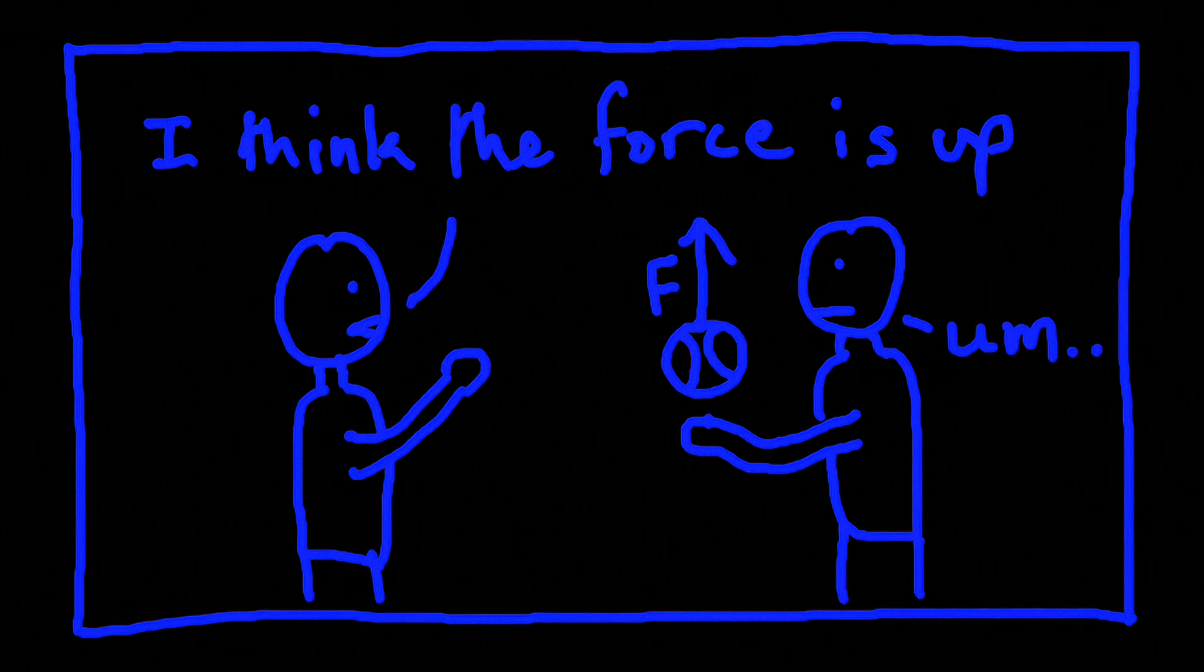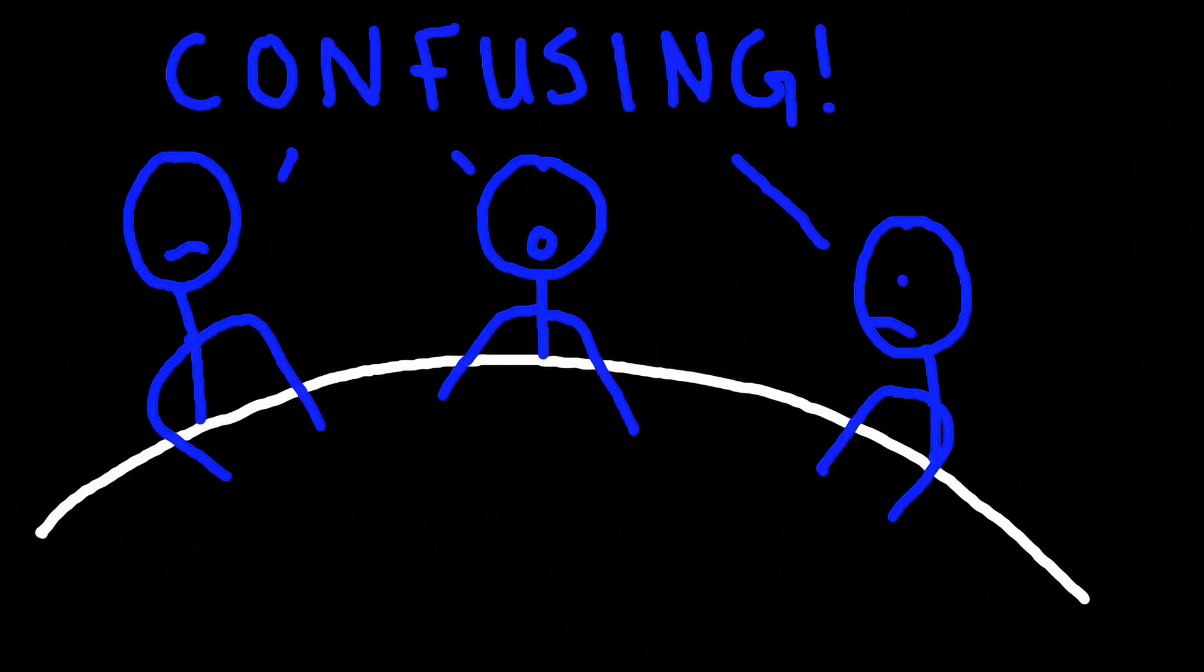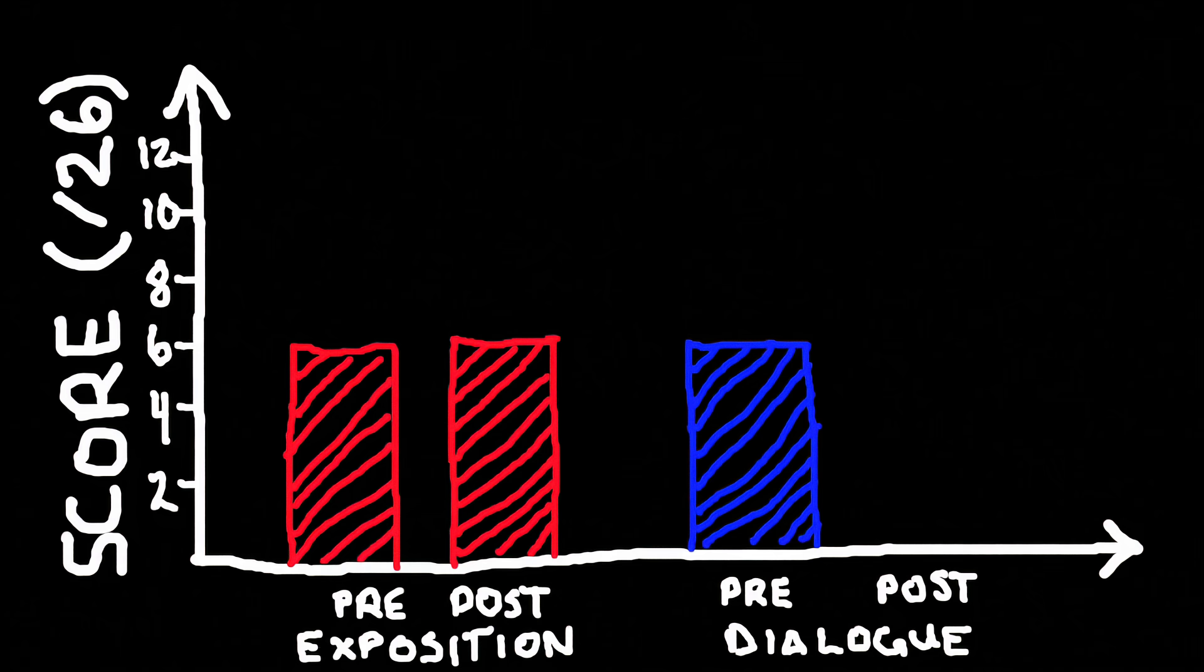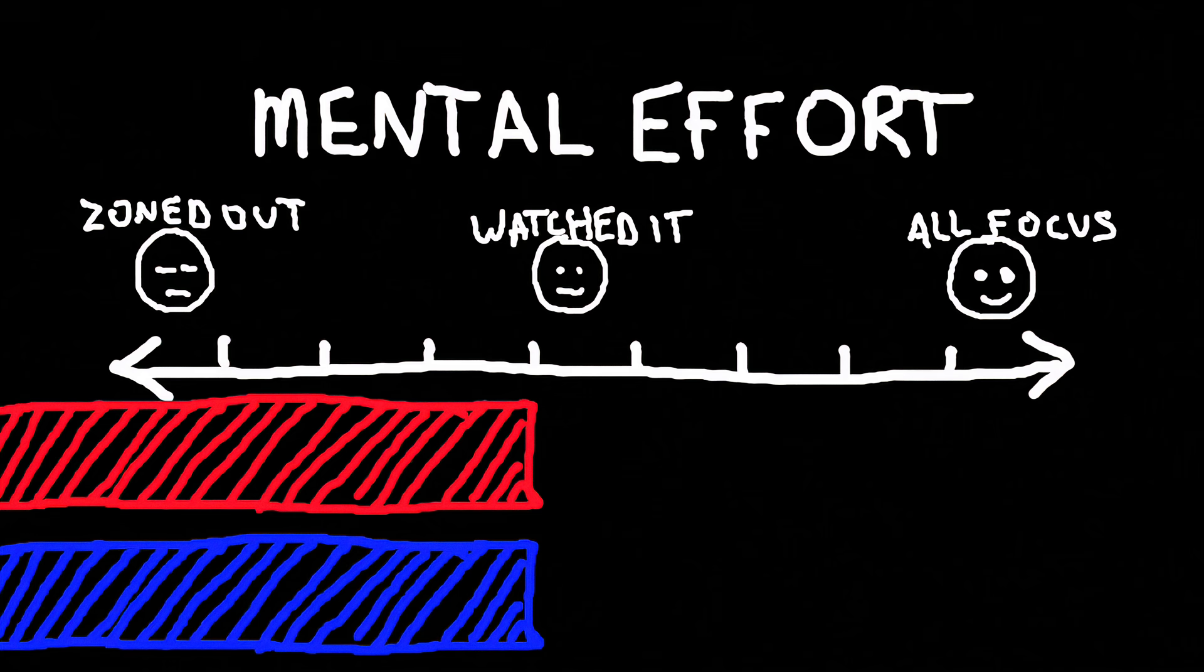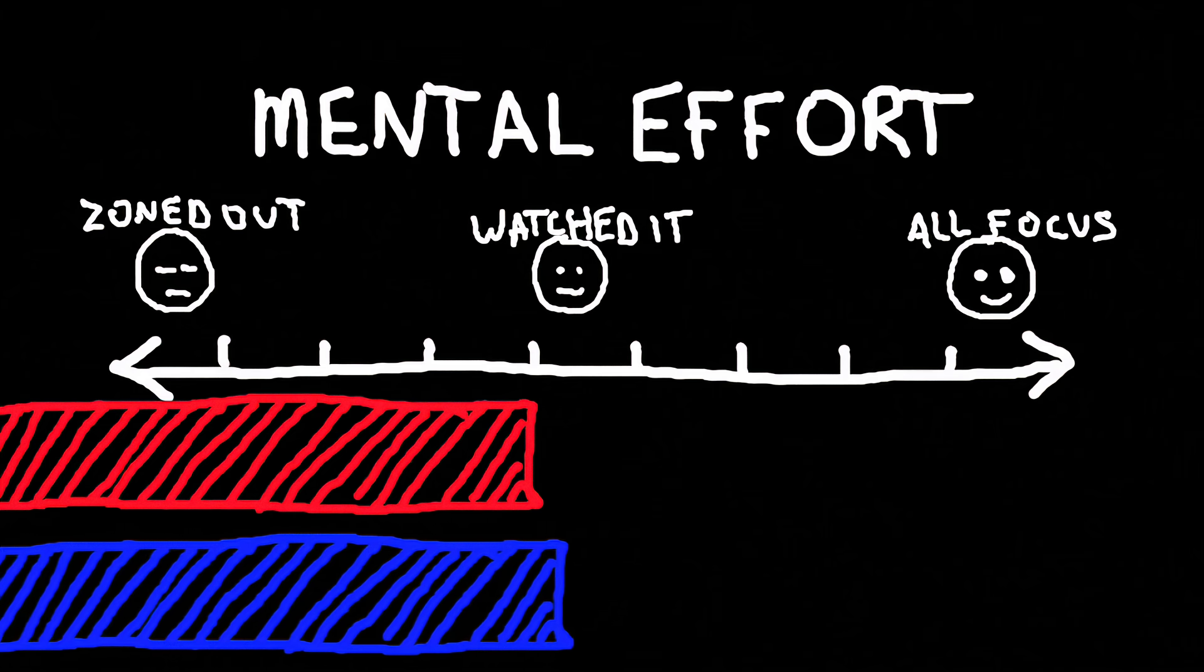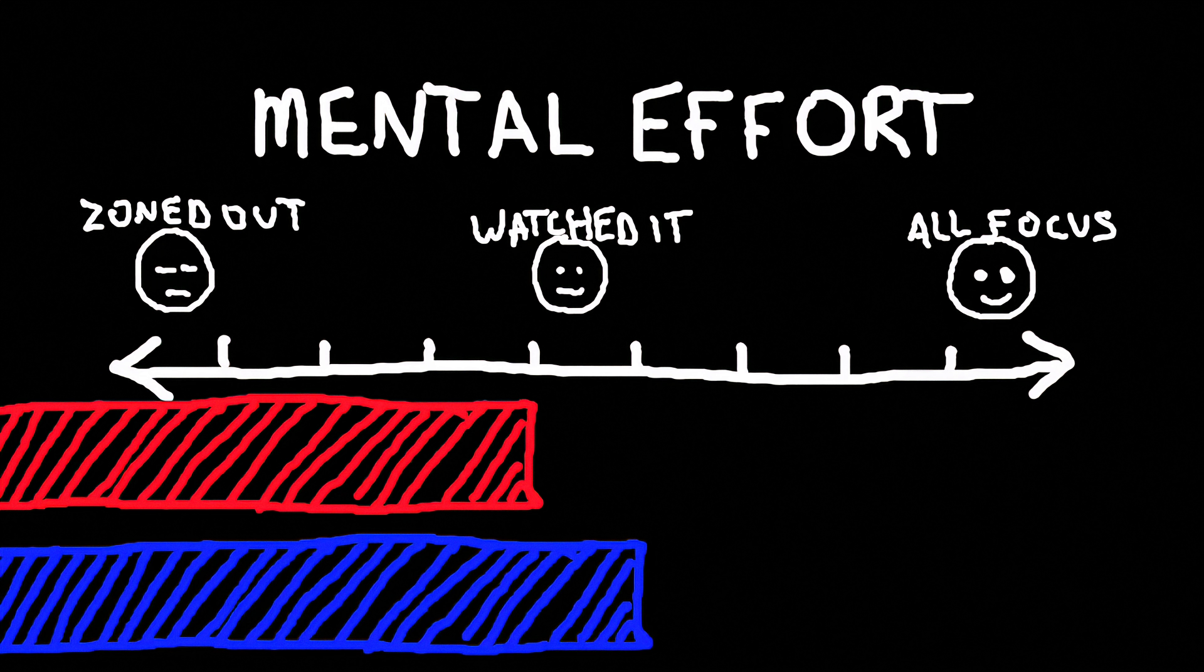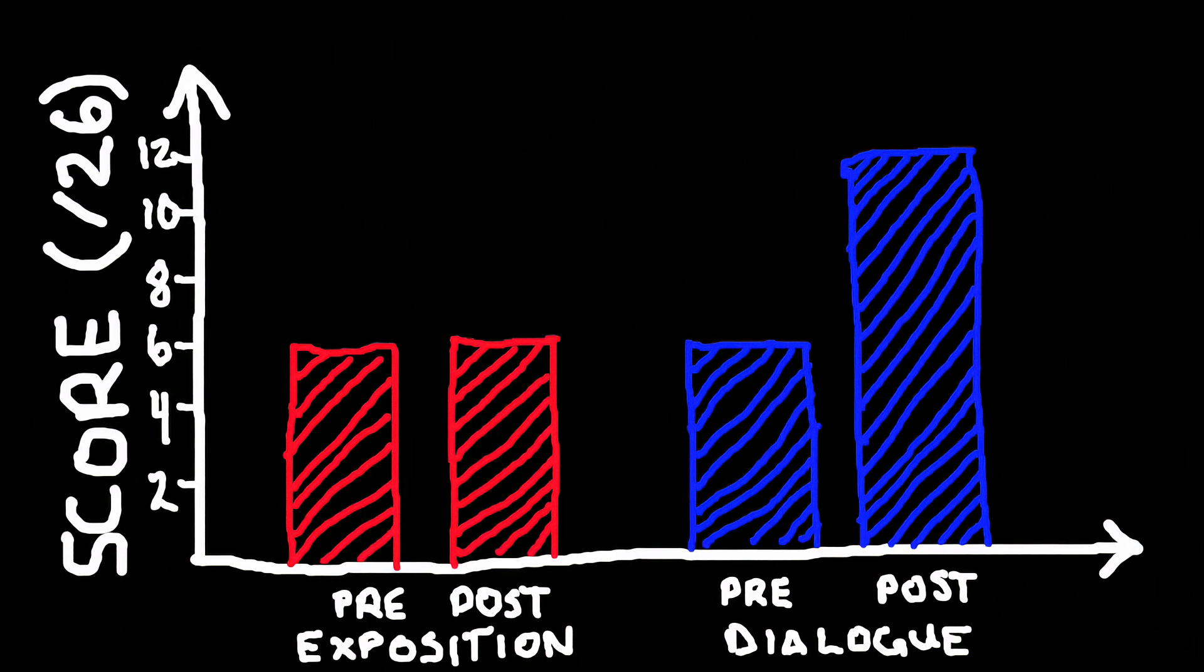In interviews with students who watched this video, no one used the words clear, concise, or easy to understand. Most often, they said it was confusing. But on the post-test, the average score nearly doubled to 11 out of 26. When asked to rate how much mental effort they invested in watching the videos, students who saw the dialogue with misconceptions averaged a whole point higher than those who saw the explanation without misconceptions. And it seems like it worked. That increased mental effort translated into more learning.